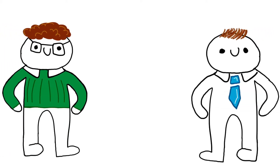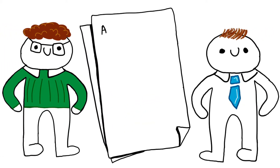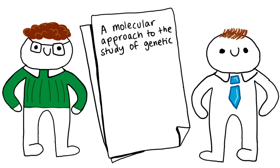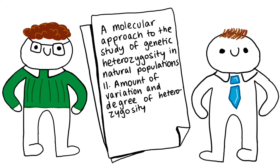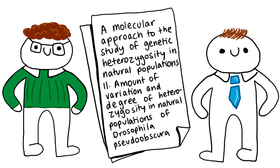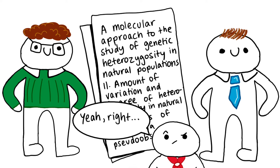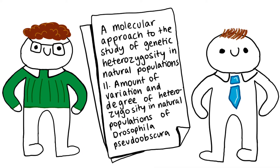A problem identified by Richard Lewontin and John Hubby in their 1966 paper entitled 'A Molecular Approach to the Study of Genetic Heterozygosity in Natural Populations: Amount of Variation and Degree of Heterozygosity in Natural Populations of Drosophila pseudoobscura.' This paper, with a really catchy title, would later go on to completely revolutionise evolutionary biology and the study of variability.